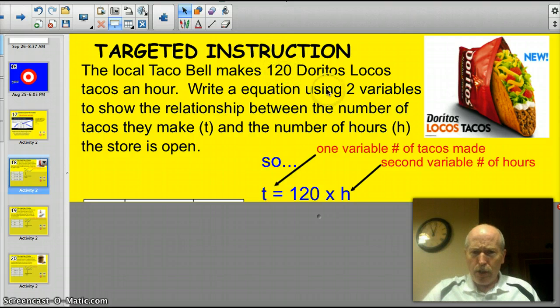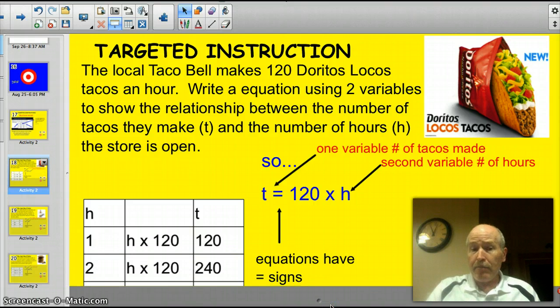So our numbers here are 120, and then our variable is H and T. So T is the total number of tacos. So I put that over here, T, and the number of hours they're open, that's what changes. If they're open longer, they're going to make more tacos, right? So 120 times H, 120 tacos, times the number of hours will equal the total number of tacos.